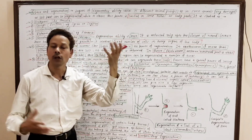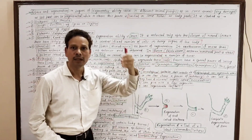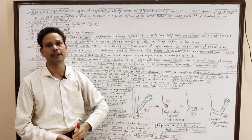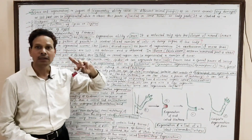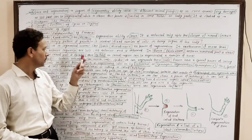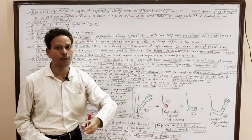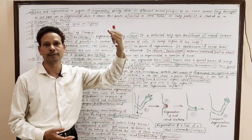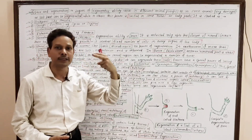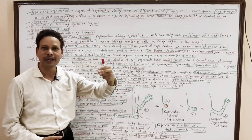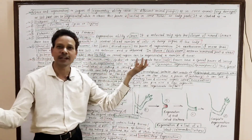In case of Uniș, a polychaete worm, the anterior part of the body is the non-sexual part called atoke (A-T-O-K-E), while the posterior part of the body contains gonads and is the sexual part called epitoke. The sexual part, epitoke, can be regenerated multiple times — this is repetitive regeneration.